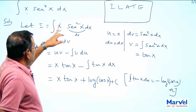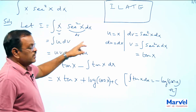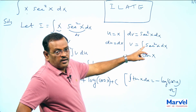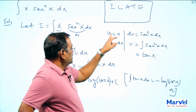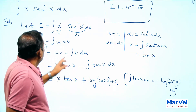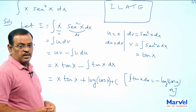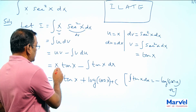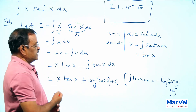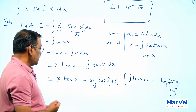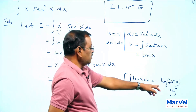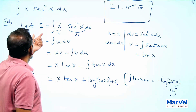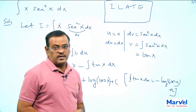So the algebraic function x is u and the remaining function is dv. Therefore: u equal to x, dv equal to secant square x dx, v equal to integral of secant square x dx equal to tan x, and du equal to dx. Applying the formula integral u dv equals u v minus integral v du gives x into tan x minus integral tan x dx, which equals x tan x plus log cos x plus c. This is the value of the given integral.